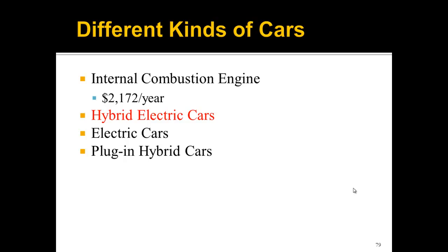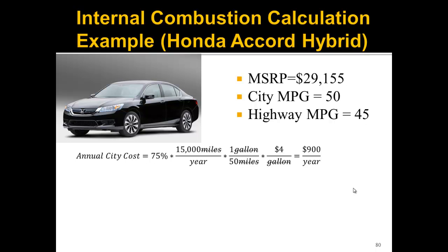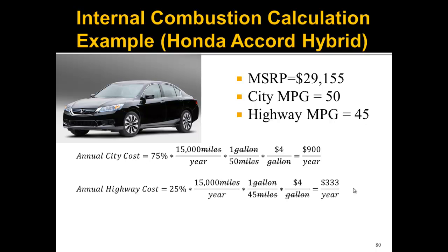Let's look at the Honda Accord Hybrid. The MSRP is $29,000, with city miles per gallon of 50 and highway miles per gallon of 45. An interesting thing about hybrids is that their city MPG is often higher than their highway MPG — counterintuitive compared to most cars — because the internal combustion engine usually shuts off at low speeds or when stopped. Using the same calculation with 50 MPG city and 45 MPG highway, the total annual fuel cost comes to about $1,200 per year.